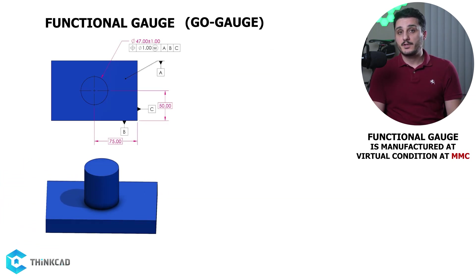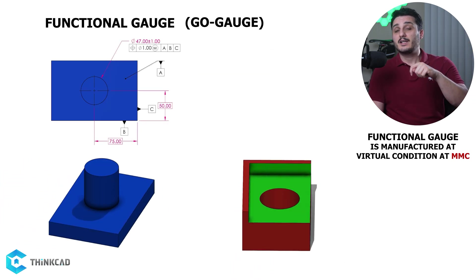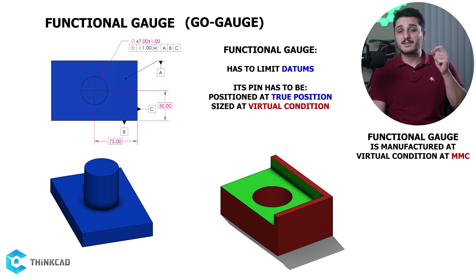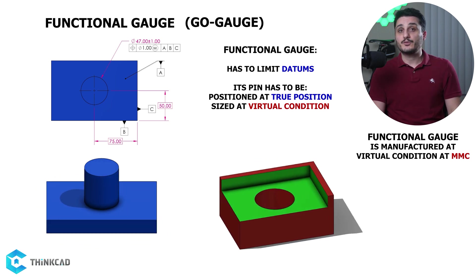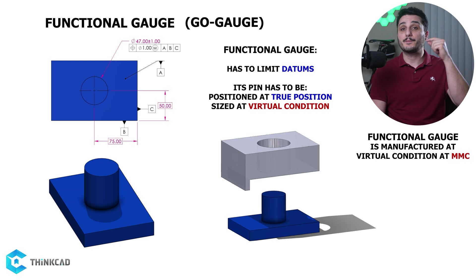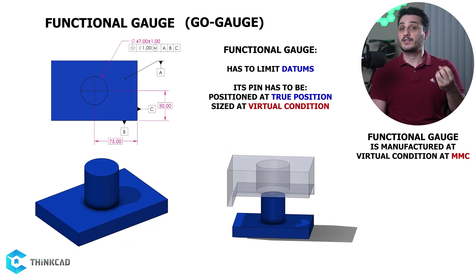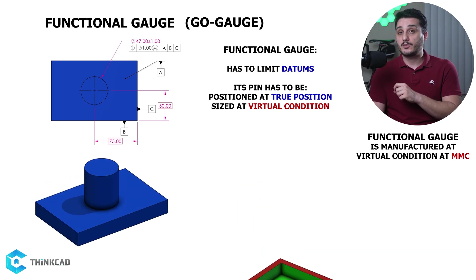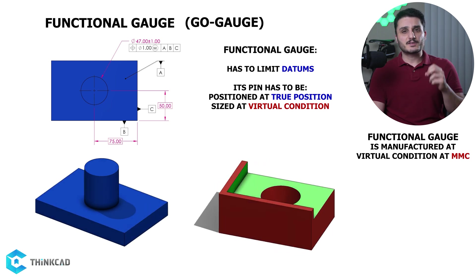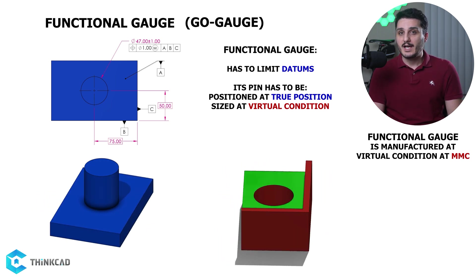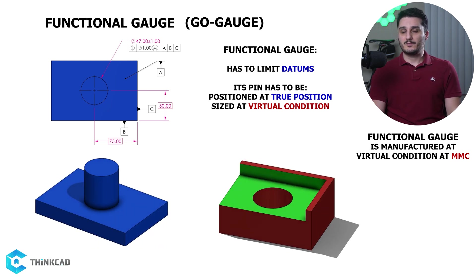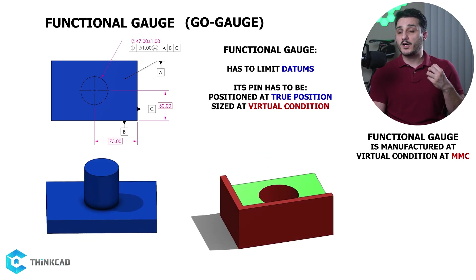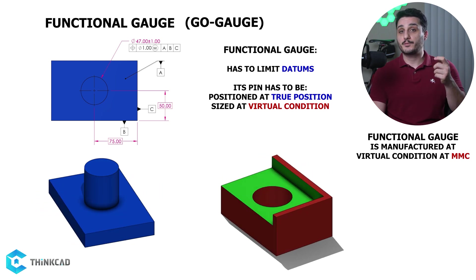For the first part with the boss feature, if you have a mating part that restricts datums A, B, and C and has a perfect hole at virtual condition located exactly at the true position, you can use this part to check if your boss's size and position are in spec simply by checking if they fit. This functional gauge looks very much like our second part with the hole, but it's not the same — the size of its hole must be at virtual condition and it has to be perfect, or as close to perfect as we can manufacture.